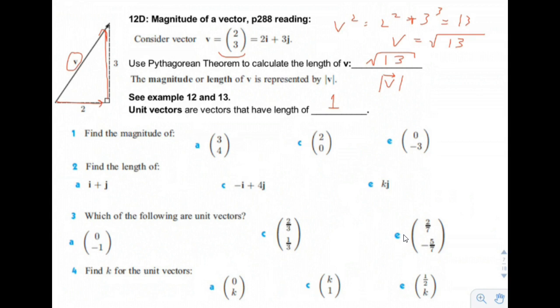Find the magnitude of vector (3, 4). Again, you're just going to be using Pythagorean's Theorem. Remember the old 3, 4, 5 triangle? 3 squared plus 4 squared equals 5 squared.